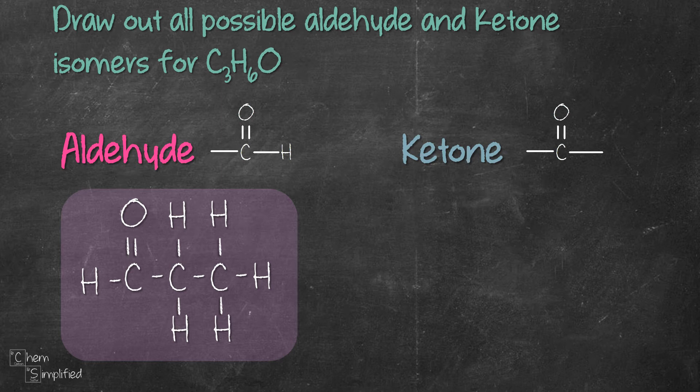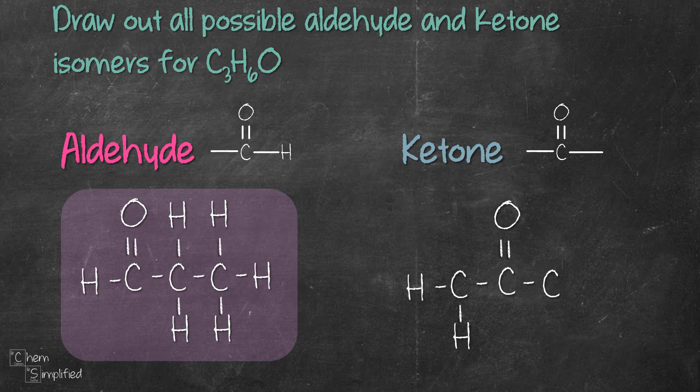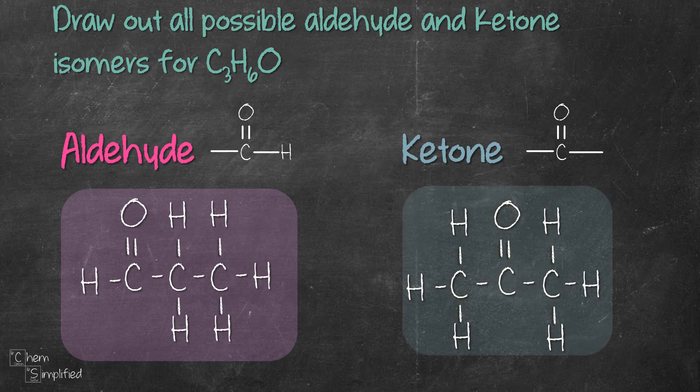Looks like we're all done with our first isomer. Since there's no other way to draw aldehyde with three carbons, let's move on to ketone. The functional group for ketone is a carbonyl carbon sandwiched between two carbons like this. By doing so, we've used up three carbons and one oxygen, so let's fill in with the remaining six hydrogens. For C3H6O, there's only one aldehyde and one ketone.